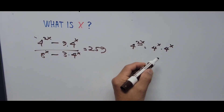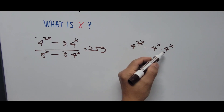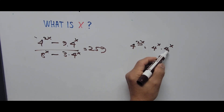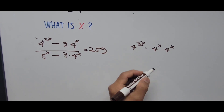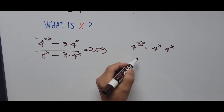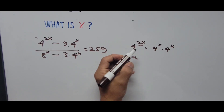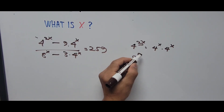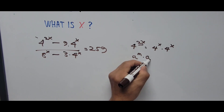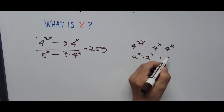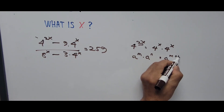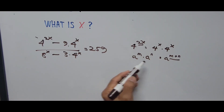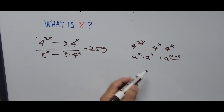That is, 4 raised to 2x is converted to 4 raised to x multiplied by 4 raised to x. We are applying the exponent rule: a raised to m multiplied by a raised to n equals a raised to m plus n. So we're adding the exponents.